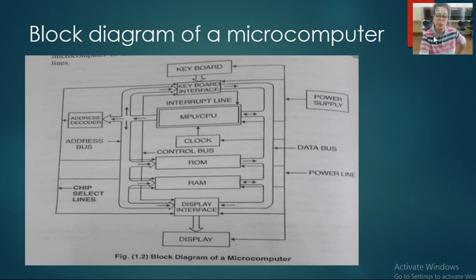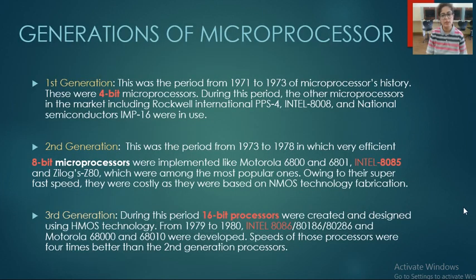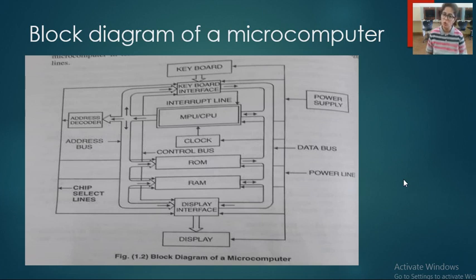For example, in the generations of microprocessor we studied that in the first generation the size was 4-bit, so the size of the data bus was 4-bit — you can transfer only 4 bits. In the second generation, the size of the microprocessor was 8-bit and the name is 8085. So if we are using the 8085 microprocessor, the size of the data bus is 8-bit, meaning you can transfer 8 bits.